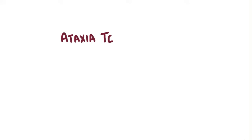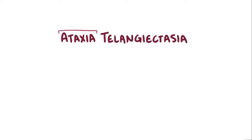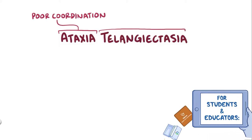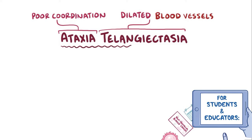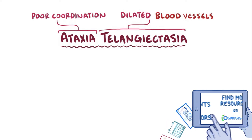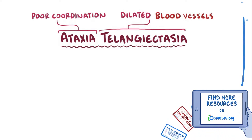With Ataxia telangiectasia, ataxia refers to poor coordination, and telangiectasia refers to dilated blood vessels, which are the two key symptoms of this disease.